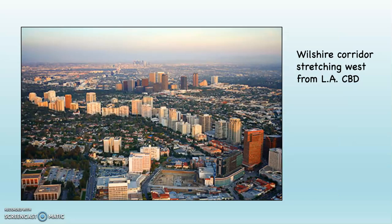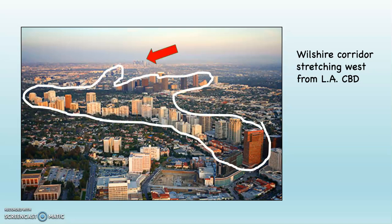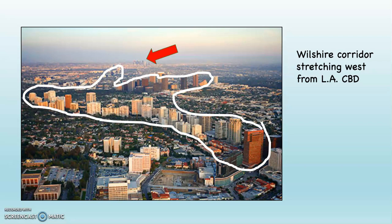The Wilshire Corridor along Wilshire Boulevard in Los Angeles demonstrates a similar thing. In this case, it's vis-à-vis the service sector. The service sector centered in the CBD — the tertiary sector — stretches out along an important transportation corridor, in this case Wilshire Boulevard, which you can see right there. The red arrow is pointing at downtown Los Angeles, the CBD, and I've circled the Wilshire Corridor there in white.